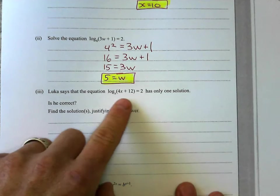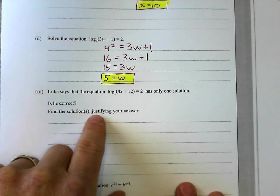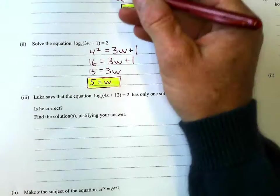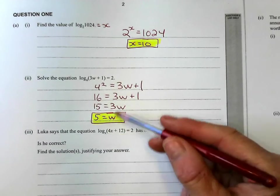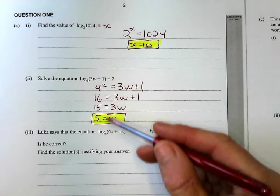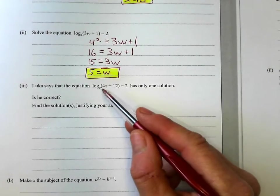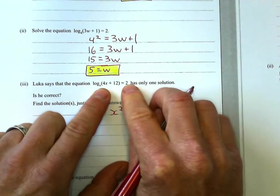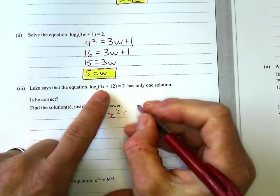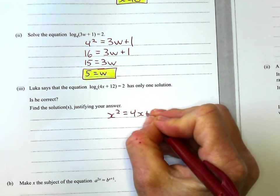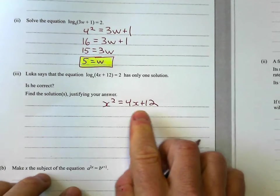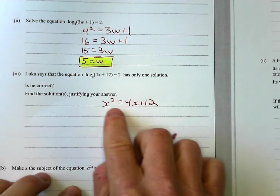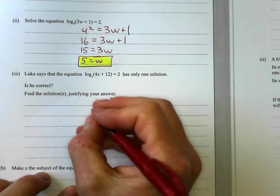Lucas says that this equation has only one solution. Is he correct? Find the solution or solutions and justify your answer. Well, let's see if Lucas... Very similar. First of all, to have these three questions all rewriting in index form. Not too much variety there, but that's okay. So we're going to say, let's write it in index form. x to the power of 2 equals this expression right here, 4x plus 12. And I don't know, Lucas. I think it looks like a quadratic, which means we might get two solutions. So I think he might be wrong.